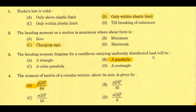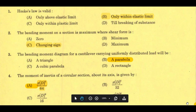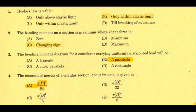Next question: the moment of inertia of a circular section about its axis — option A, pi D power 4 by 64. For a square section, moment of inertia equals A power 4 by 12. For a rectangular section, IXX equals BD cubed by 12, IYY equals DB cubed by 12, and about the base equals BD cubed by 3.